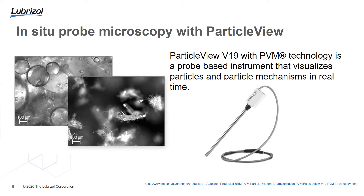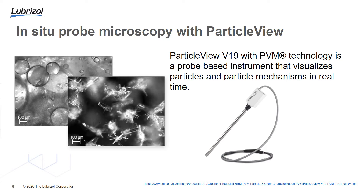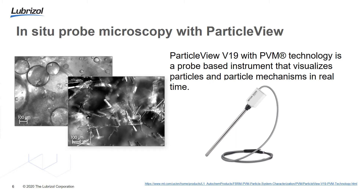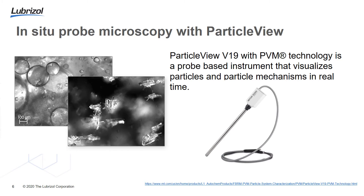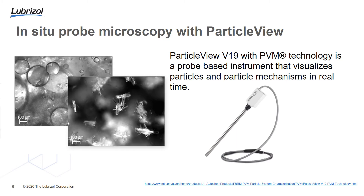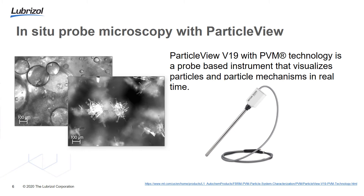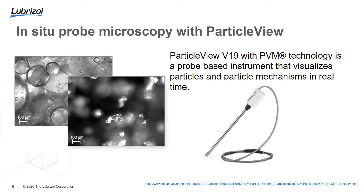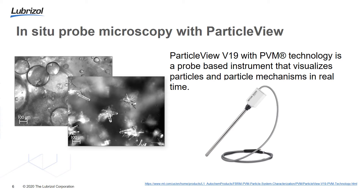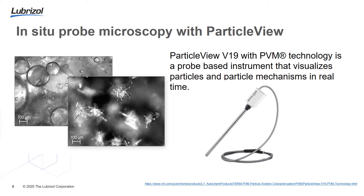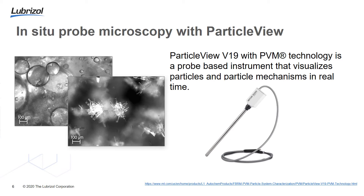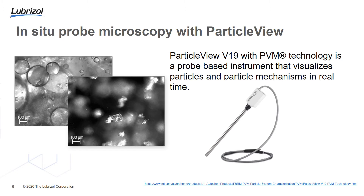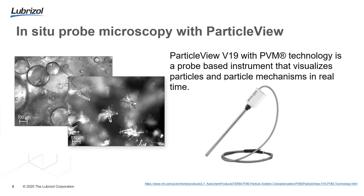ParticleView is an in-situ probe microscopy tool that captures high-resolution images of particles as they exist in situ, revealing insights for chemical processes. It is a lightweight probe that can be inserted easily into process streams and is a good complementary tool to ParticleTrack. Together they allow you to see size distribution and morphological changes by visualization and statistics, helping assign what peaks correspond to what structures.